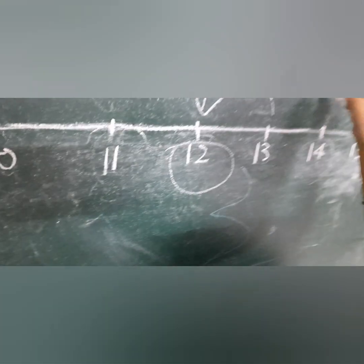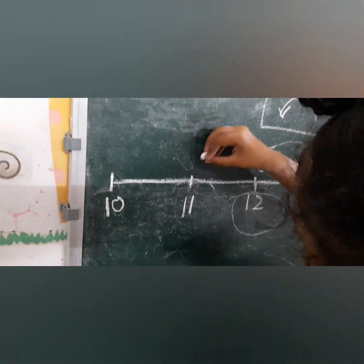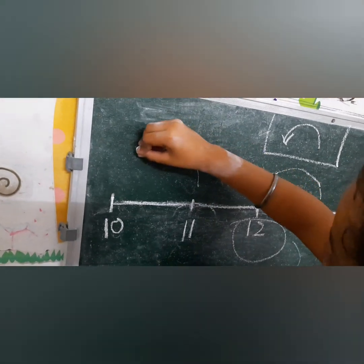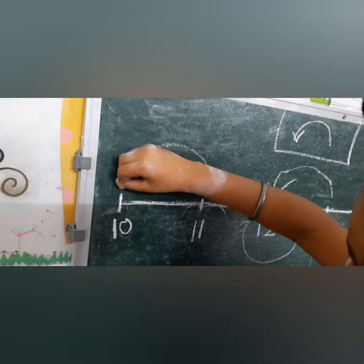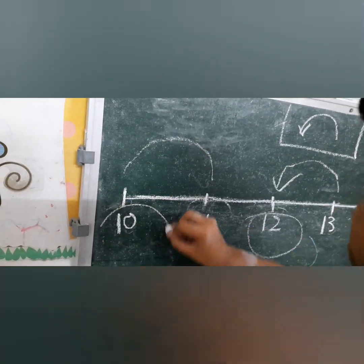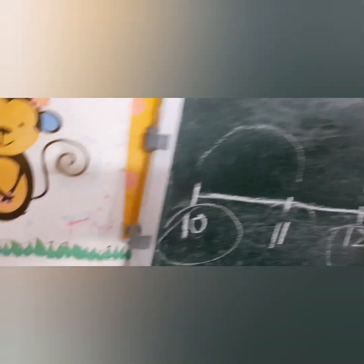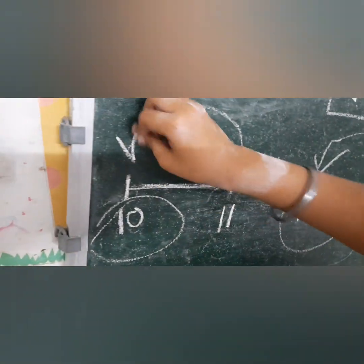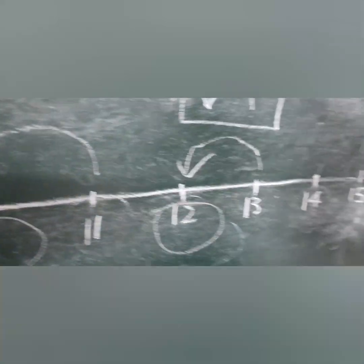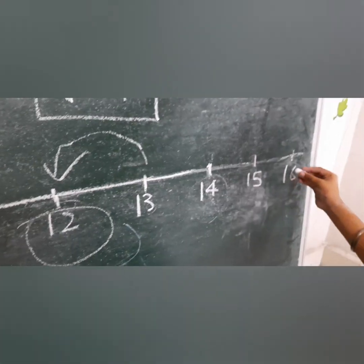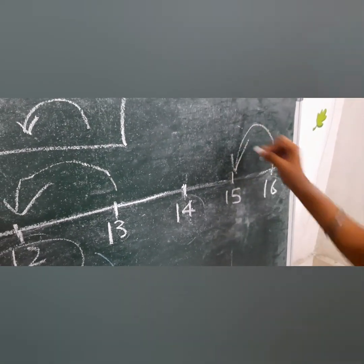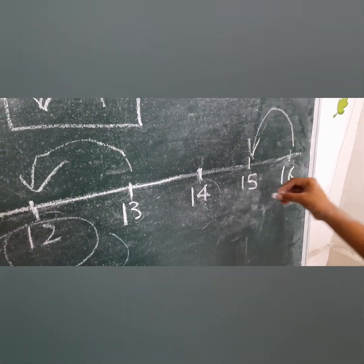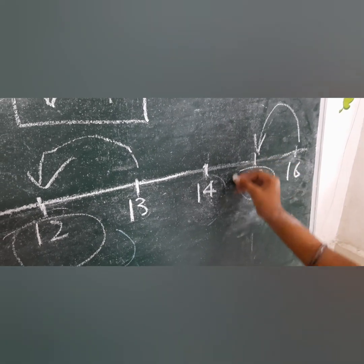What comes before 11? Before 11? 10 — circle it, very good. What comes before 16? 15 — circle the answer, very good.